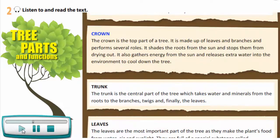Crown. The crown is the top part of a tree. It is made up of leaves and branches and performs several roles. It shades the roots from the sun and stops them from drying out. It also gathers energy from the sun and releases extra water into the environment to cool down the tree.